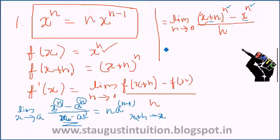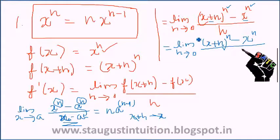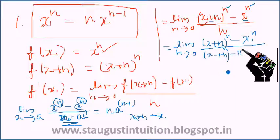So the equation becomes limit h tends to 0 of (x + h) raised to n minus x raised to n, divided by (x + h) minus x. We apply the limit formula here.